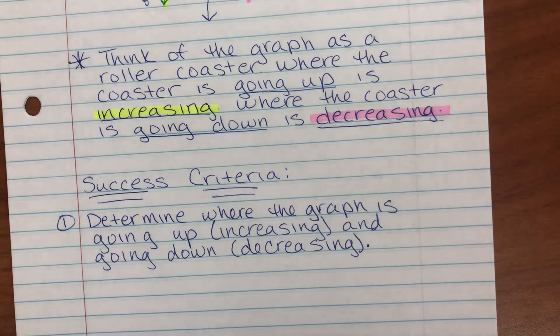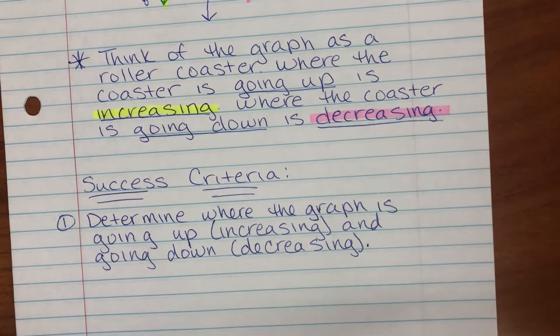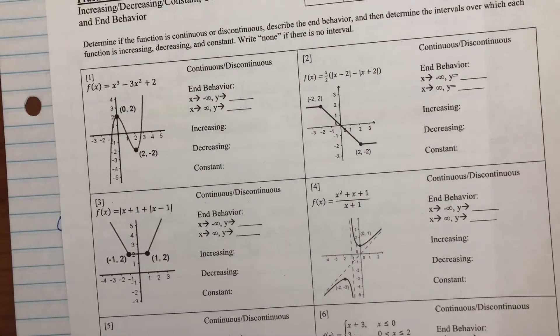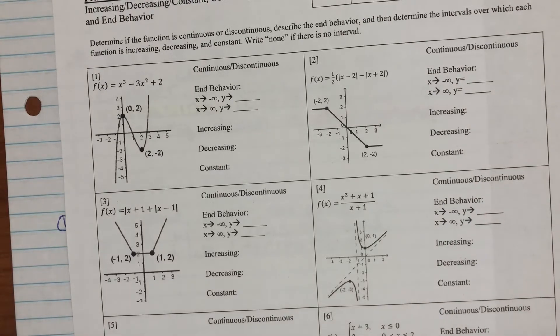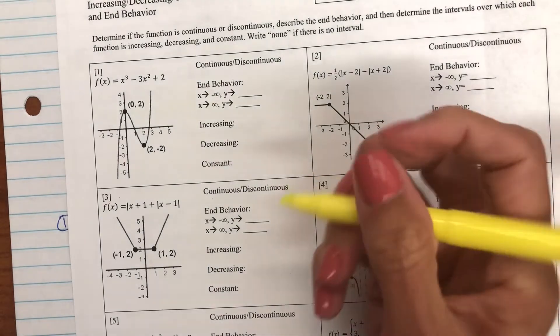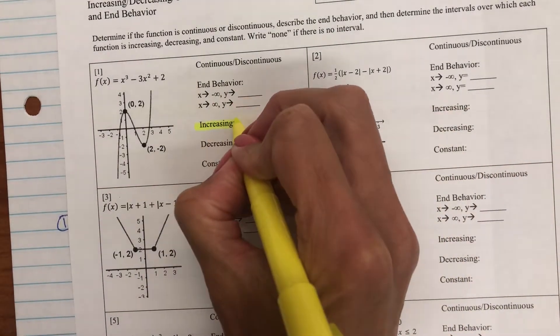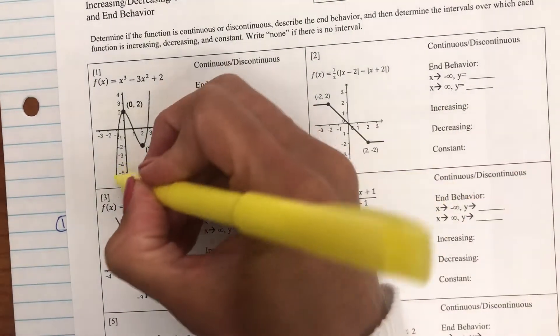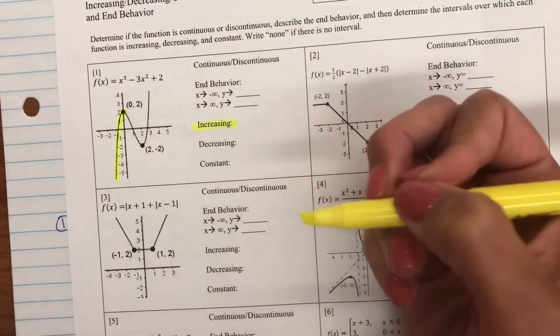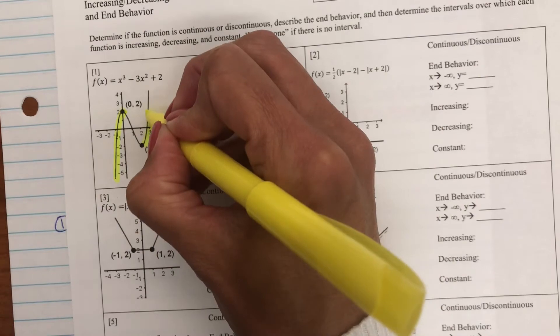Let me show you an example of this, just that step one. This is the worksheet under your classwork. I'm just going to look at the graph here, and I want to figure out where it's going up. That's increasing. I'm going to use yellow for that. It's going up here, and then it's going up here.